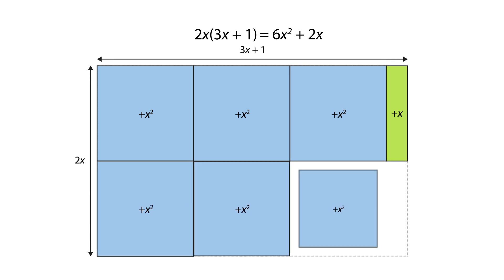When finding a product where both factors include algebraic terms like 2x multiplied by 3x add 1, the x-squared tiles are also used.